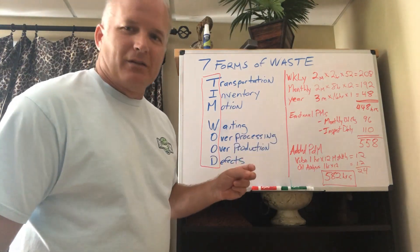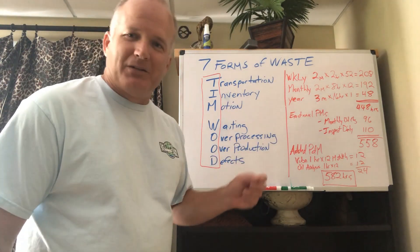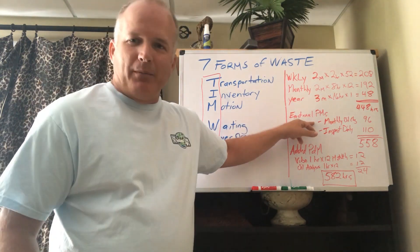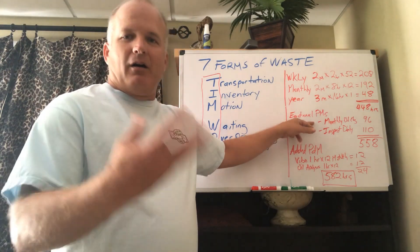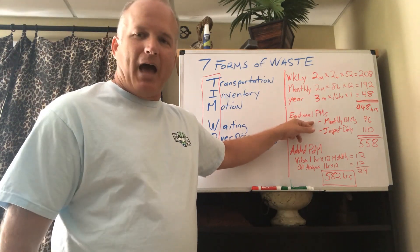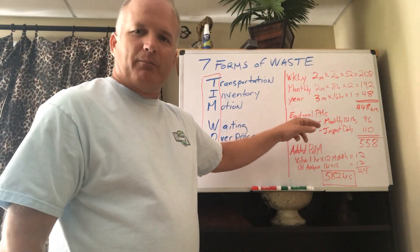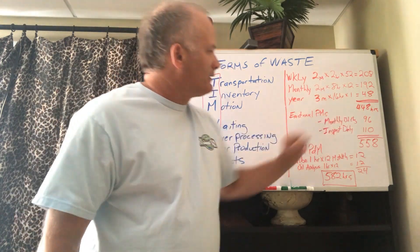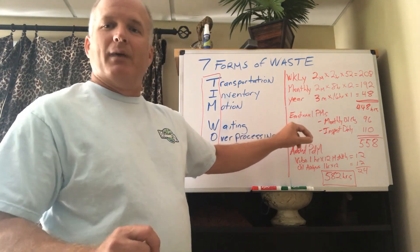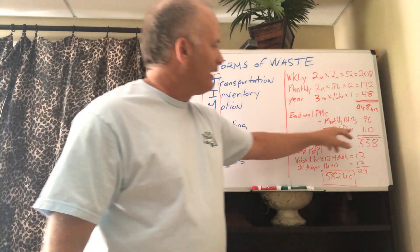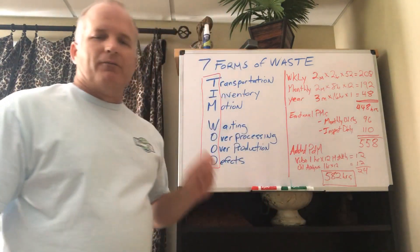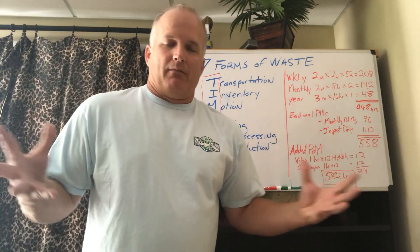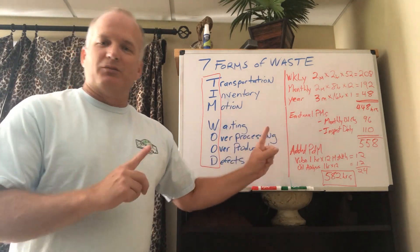Now here's the key — we had some emotional PMs. What are emotional PMs? These are PMs done out of fear, not based on failure mode. We had an event happen and the reaction of the organization was 'we don't want that to happen again.' So regardless of whether it was based on failure mode, we decided to change the oil every single month — 96 hours — and inspect daily: 20 minutes for one person daily, that's 110 hours. Total investment: 558 hours a year into maintaining that asset.